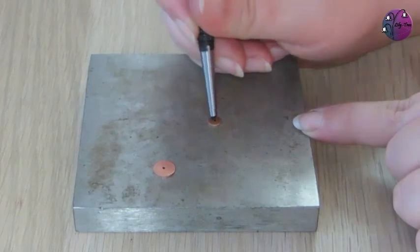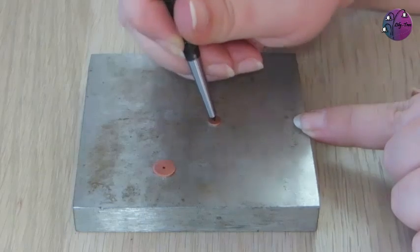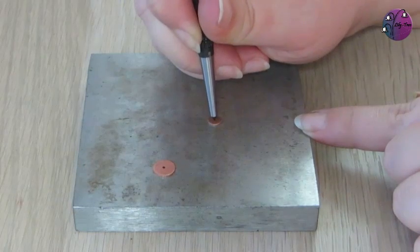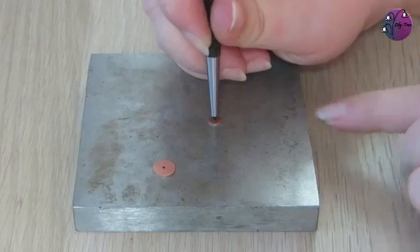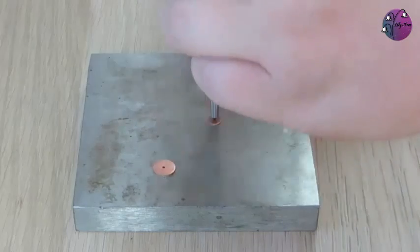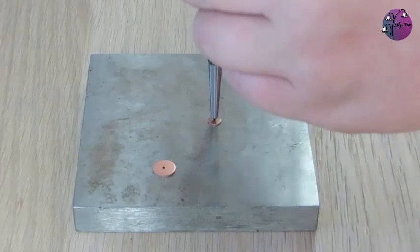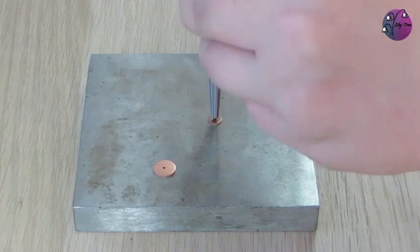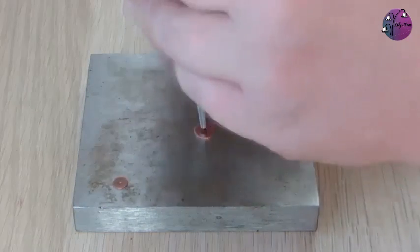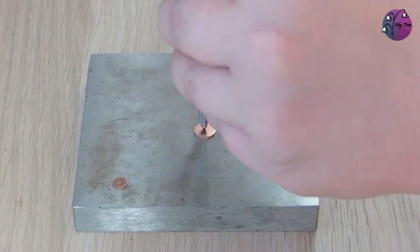I can then position my center punch on that mark, make sure it's lined up properly, and then hammer the punch a couple of times to make a divot in the disc. This will stop the drill skidding over the disc when I'm making the hole.